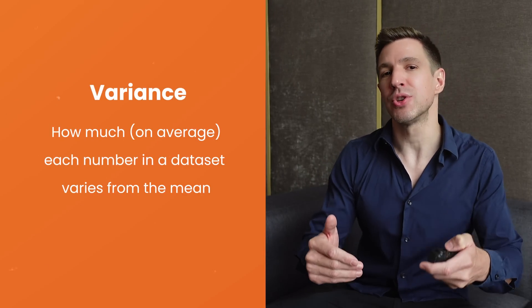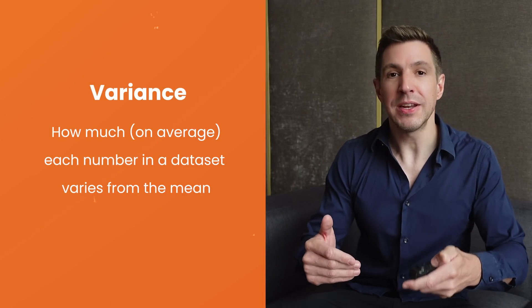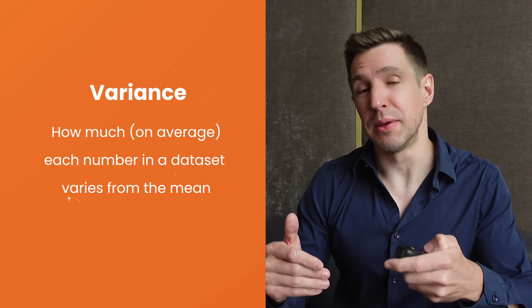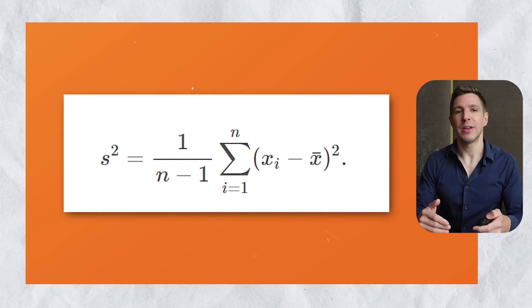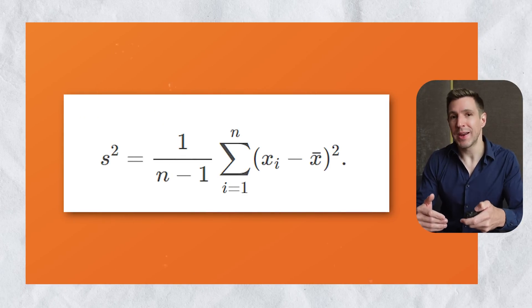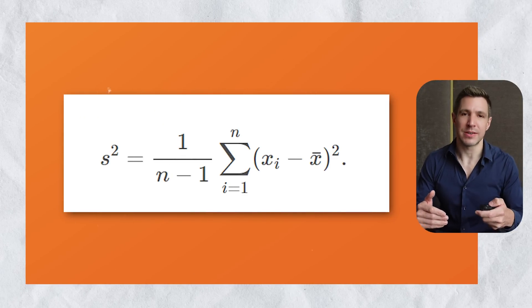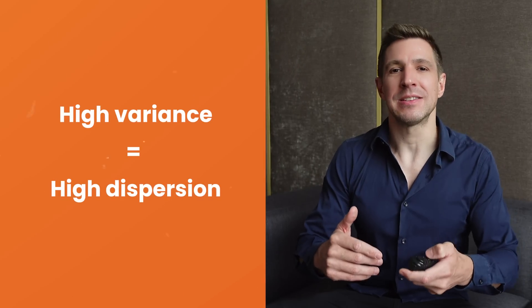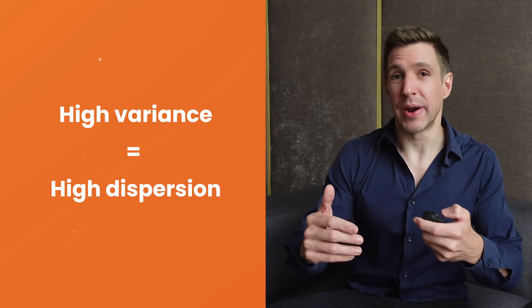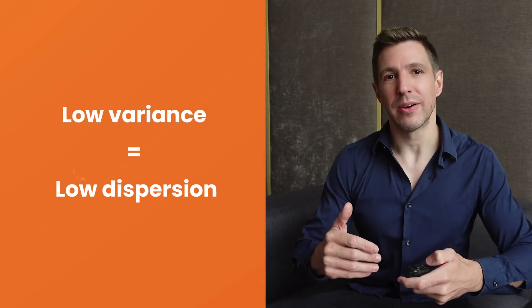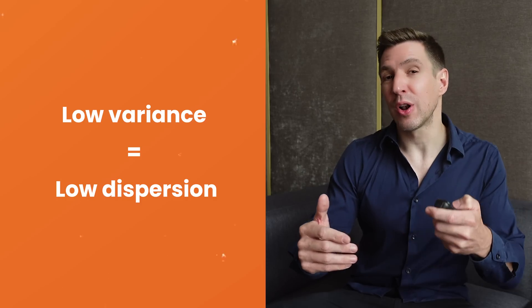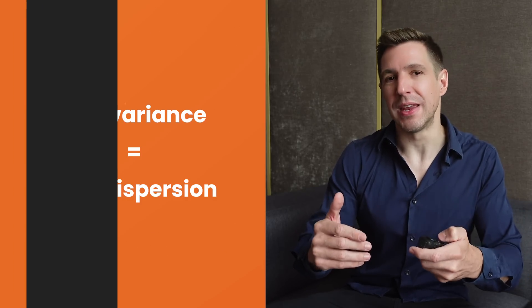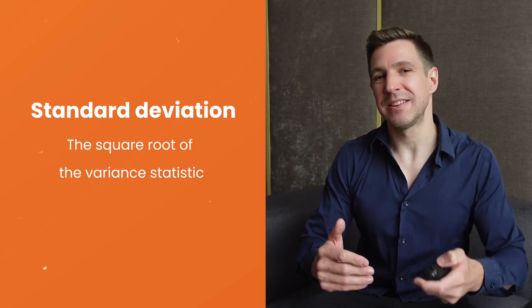Variance measures how much each number within a dataset varies from the mean. More technically, it calculates the average of the squared differences between each data point and the mean. All you really need to appreciate here is that a higher variance indicates that the data points are more spread out, while a lower variance suggests that the data points are closer to the mean. Last but not least, we have standard deviation.